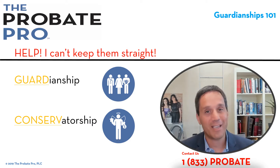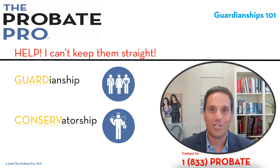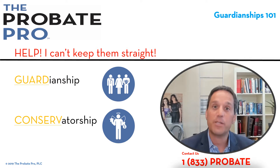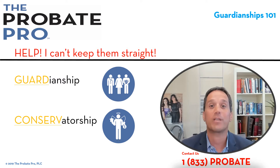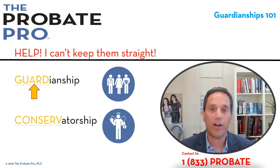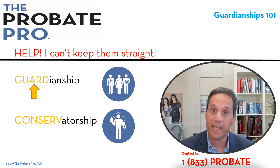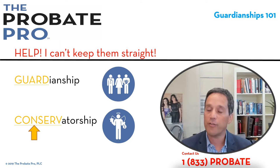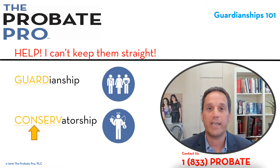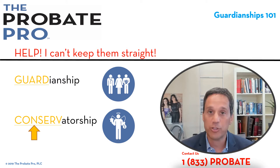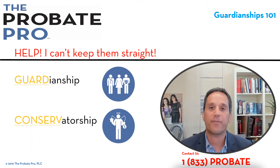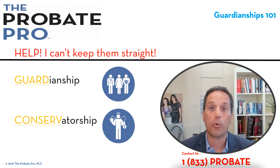It can be really confusing to remember the difference between a guardianship and a conservatorship. The best way to remember is to look at the root of each word. 'Guard' — guardianship addresses issues relating to the care and well-being of another person. 'Conserve' — think of conserving money. A conservator is responsible for the financial issues relating to an individual. One person may perform both roles, or it could be two different people.